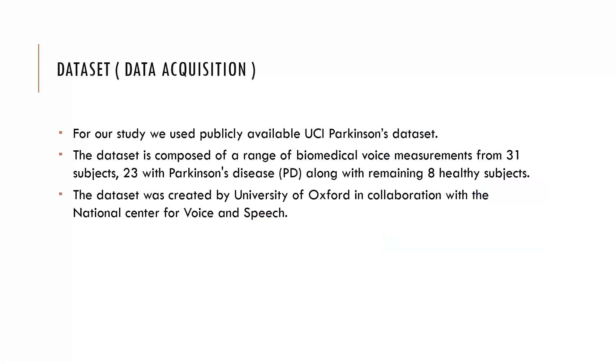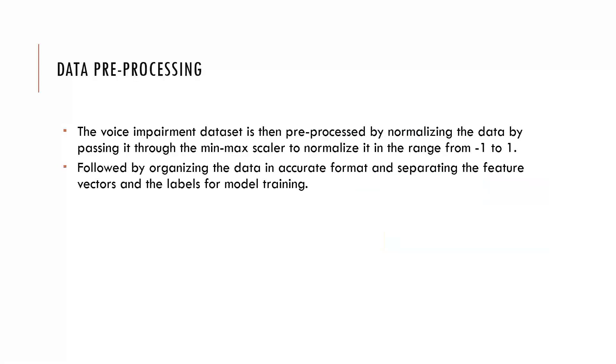Coming to data pre-processing phase, the voice impairment dataset is then pre-processed by normalizing the dataset by passing it through a min-max scaler to normalize it in the range of minus one to one. Normalization is basically a technique utilized as part of data preparation for machine learning. It is mainly utilized for changing the numeric values in the dataset to a common scale without distorting the difference in the range of values involved. As our dataset contains various features having different ranges, hence we normalized it so that each feature is scaled to a particular range. We also followed by organizing the data in accurate format and separating the feature vector and label for the model training and testing.